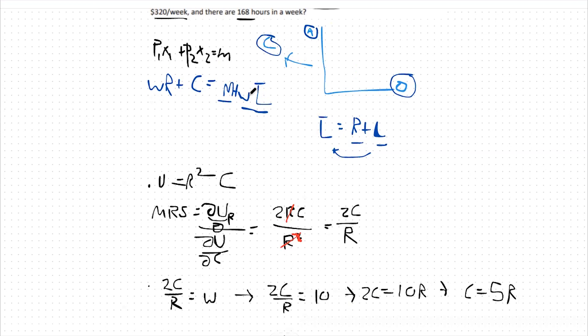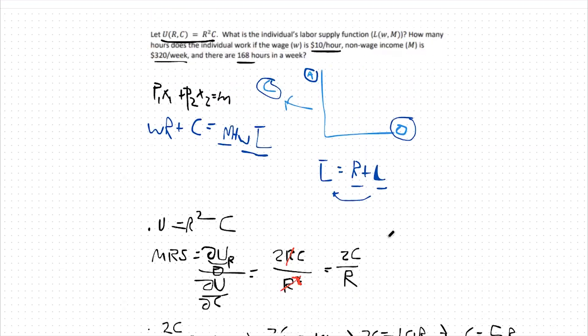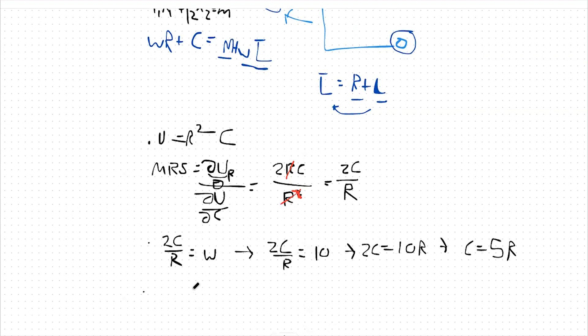From there we're going to plug into our budget constraint to figure out our optimal amount of recreation. We're going to say 10R plus C equals my non-wage income of 320 plus my wage of 10 times my number of hours I could possibly work which is 168.